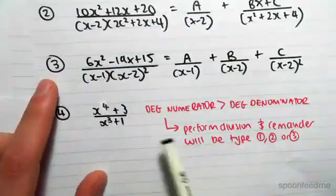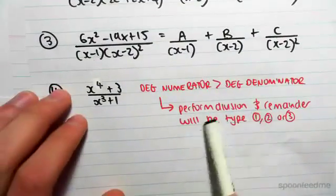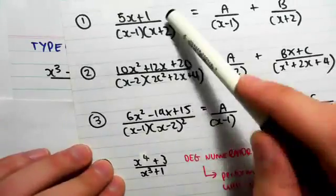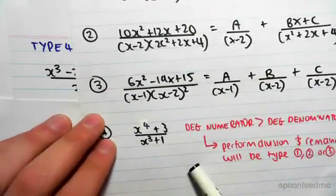So we're first going to perform long division and then once our answer will be in the form of Type 1, 2, or 3, we'll just go back to this. So it's just one extra step and then we're just going back there.